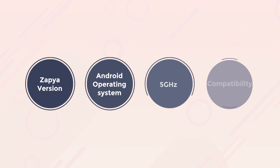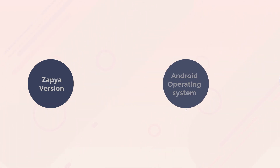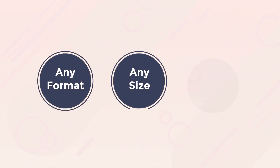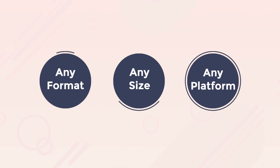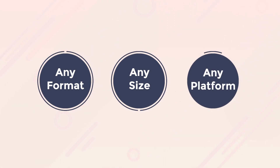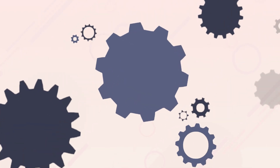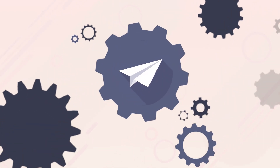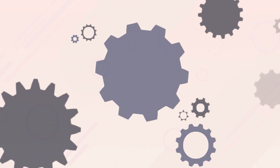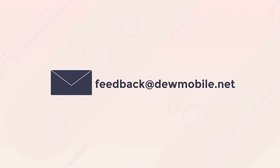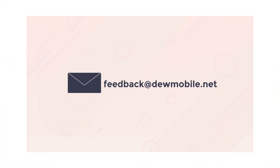As you can see, your transfer speeds are determined by a number of factors. We have optimized Zapia so you can transfer files of any format and any size to any platform, and because of this, some of the default settings may not be the best ones for your device. You have the power to change the settings to ensure you experience the fastest transfer speeds possible. If you have any questions, feel free to ask us in the comments below or send us an email at feedback@domobile.net. Thanks for watching!